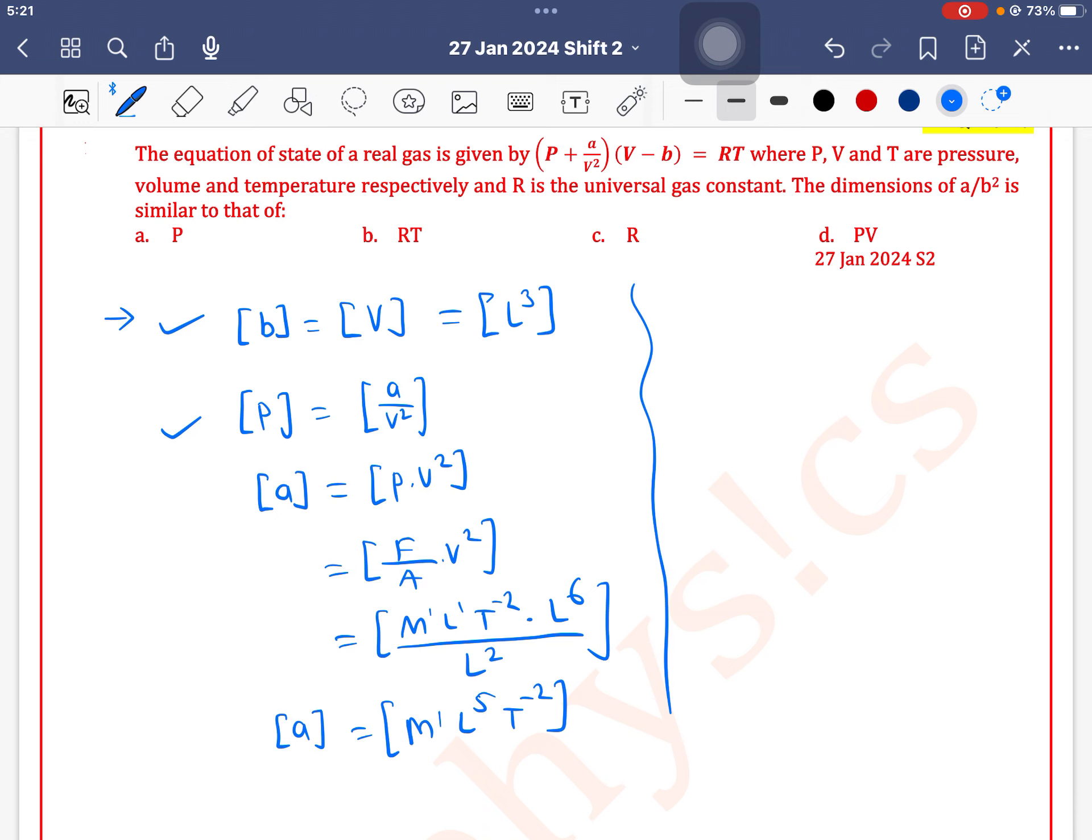And it is asked to find dimension of A by B square. So A by B square ka dimension kya aega? A ka dimension hai M1 L5 T minus 2. And B ka dimension kya hai? L cube. So L cube ka power 2. This will be M1, numerator me L ka power 5, denominator me L ka power 6, so L minus 1 T minus 2.